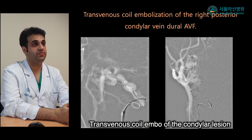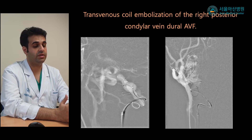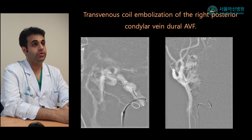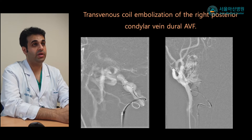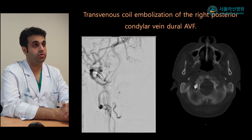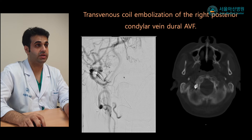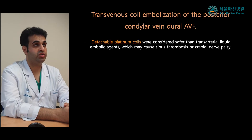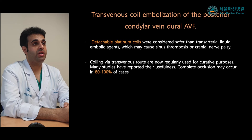We then performed transvenous coil embolization of the right posterior condylar vein dural AV fistula. We used a triaxial technique due to the vascular tortuosity of the paravertebral venous plexus, and detachable coils were deployed at the fistula point, achieving complete occlusion. We used detachable coils because they are considered safer than transarterial liquid embolic agents, which may cause sinus thrombosis or cranial nerve palsy at the skull base.